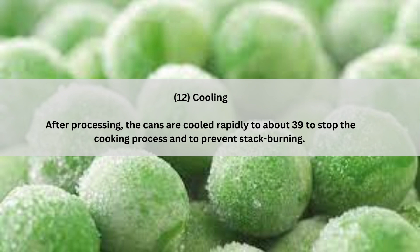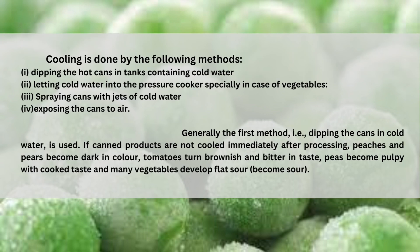Cooling: After processing, the cans are cooled rapidly to about 39 degrees Celsius to stop the cooking process and to prevent stack burning. Cooling methods include: dipping the hot cans in a tank containing cold water; letting cold water into the pressure cooker; spraying cans with jets of cold water; and exposing the cans to air. If canned products are not cooled immediately after processing, peaches and peel become darkly colored, tomatoes turn brownish and bitter, peas become mushy with a cooked taste, and many vegetables become sour.